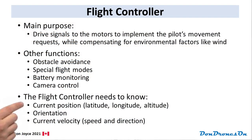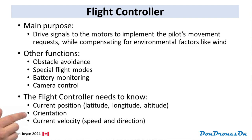Depending upon the architecture of your drone, these functions could be all in one chip or distributed across various subcontrollers on board. In order to be able to execute the pilot's commands, the flight controller needs to know precisely where the drone is, how it is oriented, and the current velocity. This information is provided by a combination of the GPS, the IMU, and a slew of other sensors, which we will now talk about.